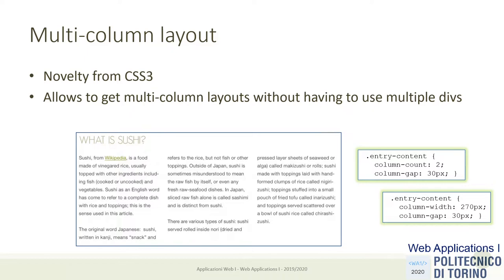There's also multi-column layout: inside a box you can have text wrap into different columns simply by defining how many columns you want and the spacing between them. Everything is formatted automatically, so you don't need to split text into separate divs or manually calculate where each column breaks.